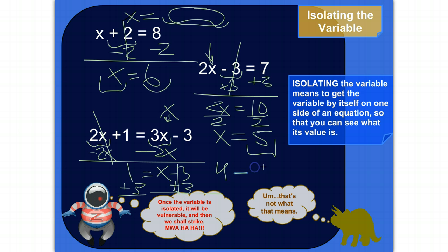And this side is just x. So we've isolated the variable this time on the right side of the equation. And we can step back and say, what does x equal? It equals four.